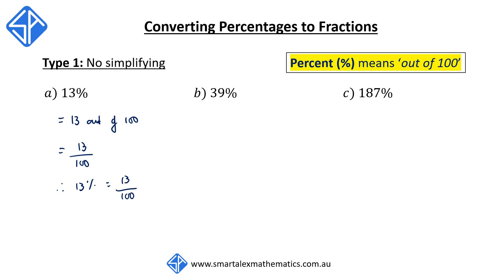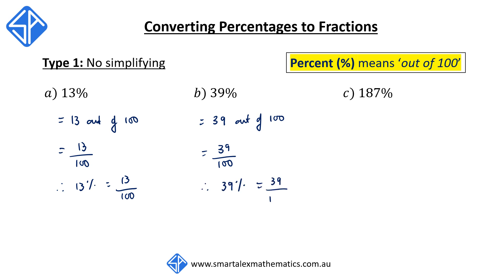Question B: 39%. Same thing — 39% means 39 out of 100. So this can be written as a fraction as 39 over 100. And because it can't be simplified, 39% is simply 39 over 100.